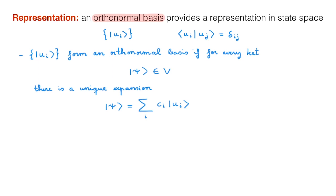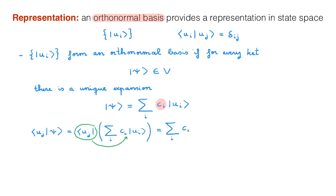Just like in the familiar Euclidean vector space we typically write vectors in a particular basis — for example the Cartesian xy basis — in state space we can also write states in a basis, in this case the u basis. The c_i are the expansion coefficients. To find them, we first project the state |ψ⟩ on a basis ket |u_j⟩, then write out |ψ⟩ in the u_i basis. We can then move the ⟨u_j| term inside the sum and obtain Σ_i c_i ⟨u_j|u_i⟩. As we're working with an orthonormal basis, this bracket is simply δ_ij, which means that the only non-zero term in the sum is c_j.